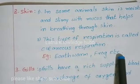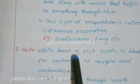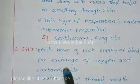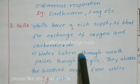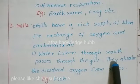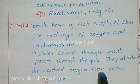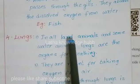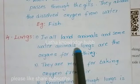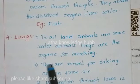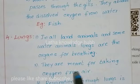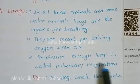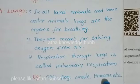Third, Gills: gills have a rich supply of blood for exchange of oxygen and carbon dioxide. Water taken through the mouth passes through the gills, which absorb the dissolved oxygen from water. Example: fish. Fourth, Lungs: in all land animals and some aquatic animals, lungs are the organs for breathing, taking in oxygen from air. Respiration through lungs is called pulmonary respiration. Examples: cow, dog, whale, humans.